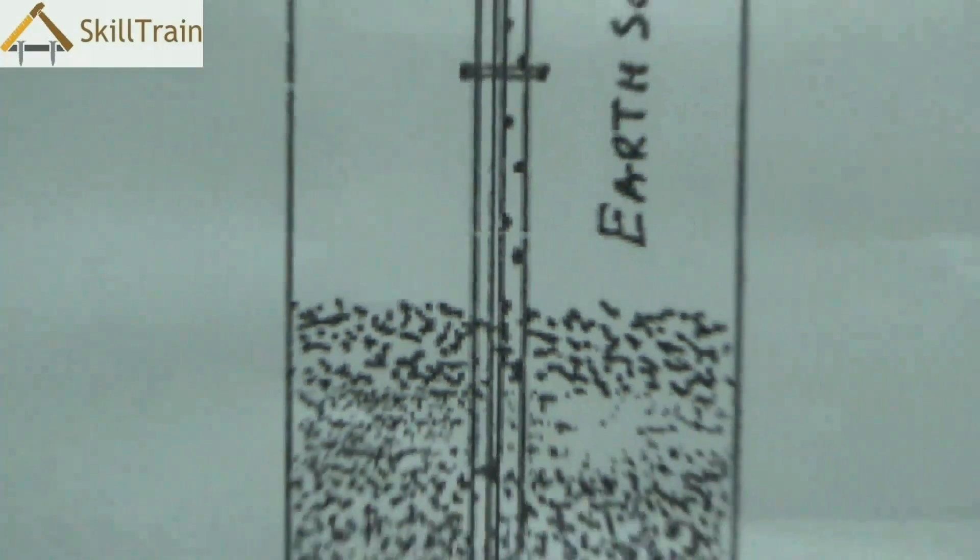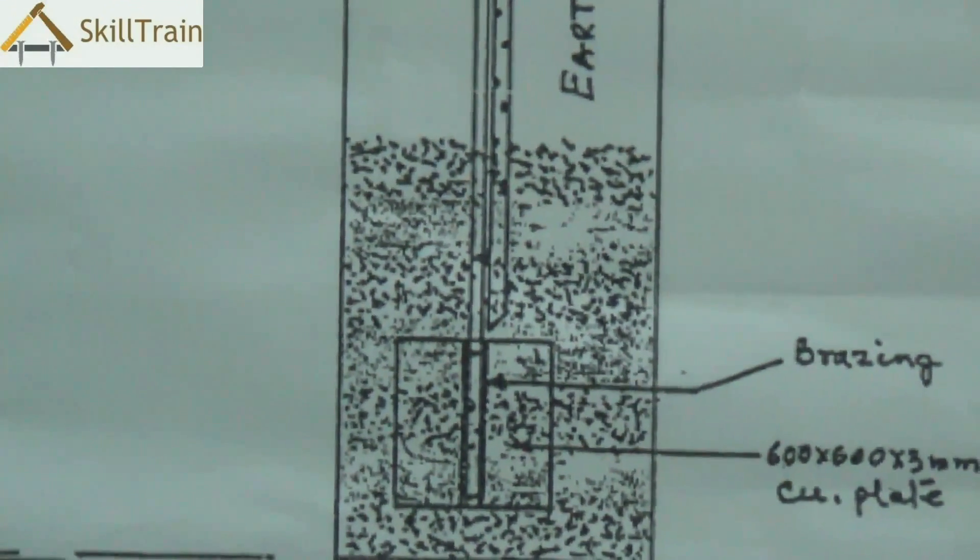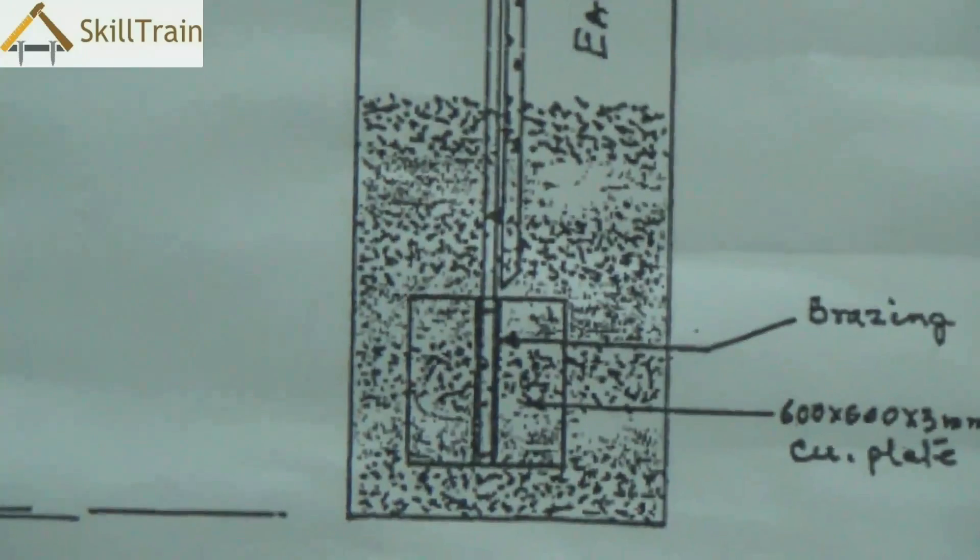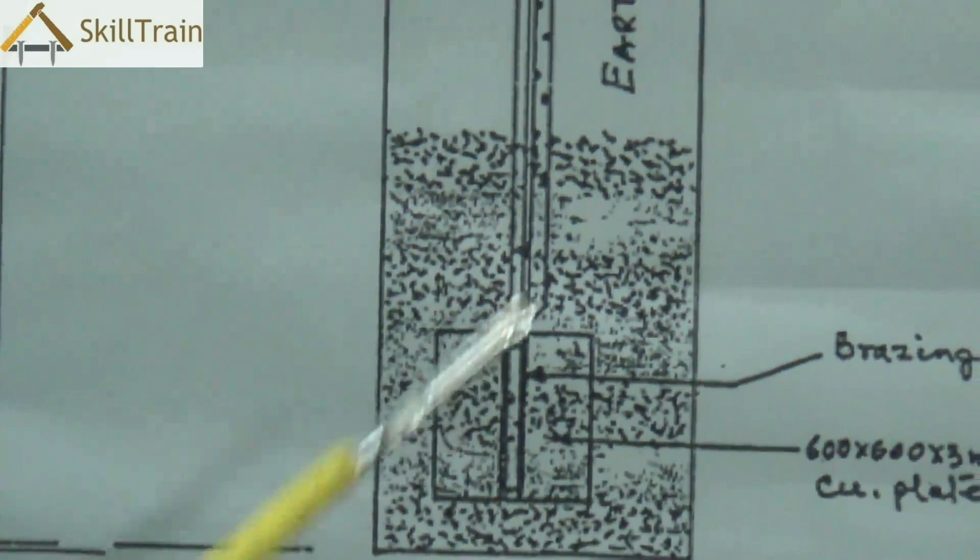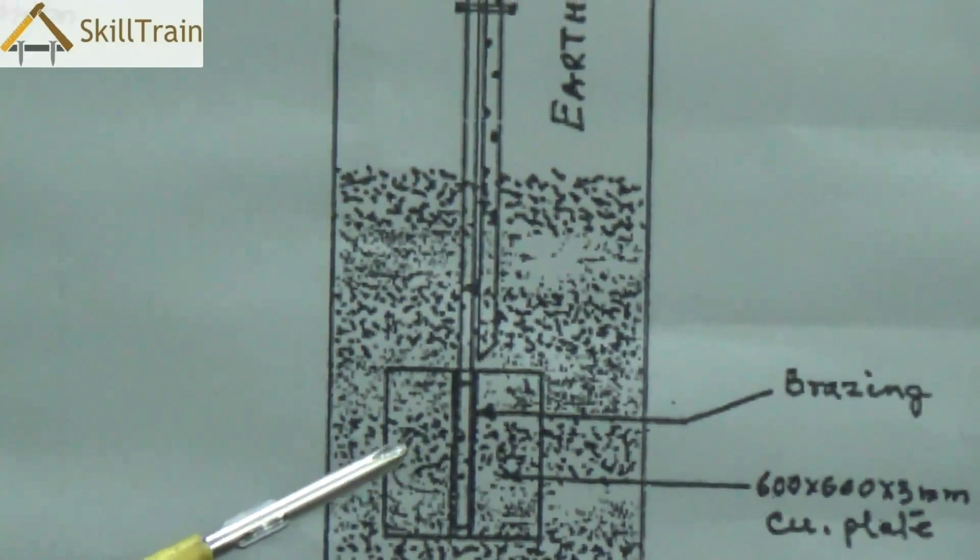Inside this we also fill it up with salt and charcoal. Charcoal essentially to maintain the humidity inside the pit and salt acts as a good ionic solution which dissipates the current that is received through the copper plate.